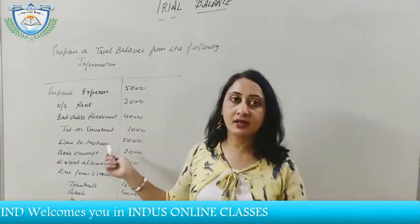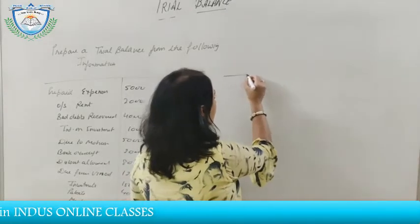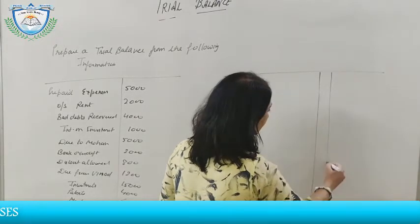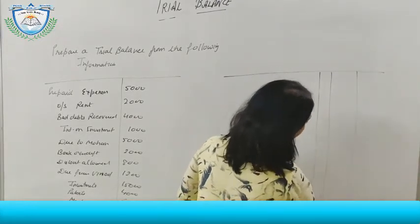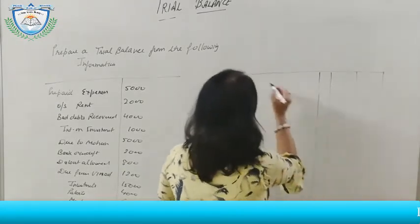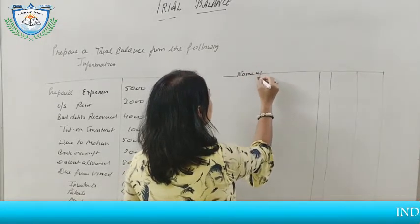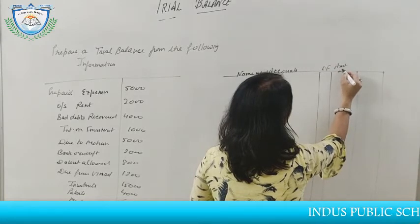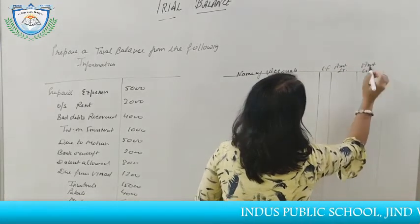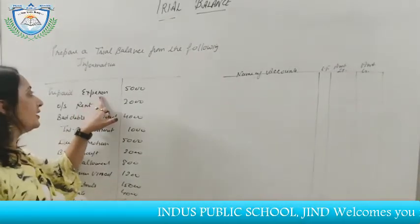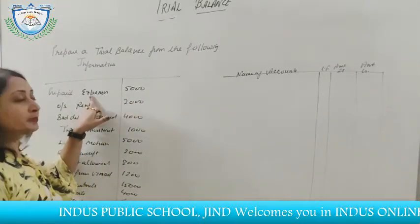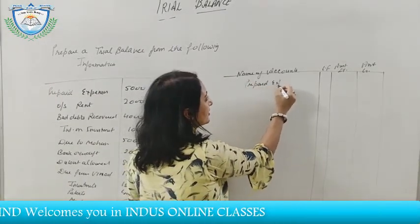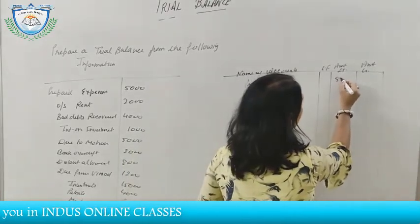We will prepare a trial balance. The format has: name of accounts, ledger folio, amount debit, and amount credit. First, prepaid expenses — rupees 5,000. It is an asset, so it has a debit balance. Next, outstanding rate — it is a liability, so credit balance, rupees 2,000.